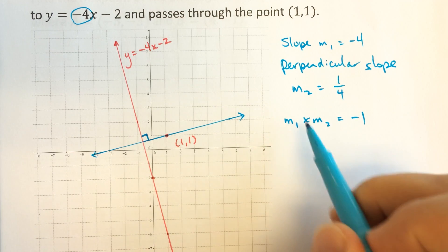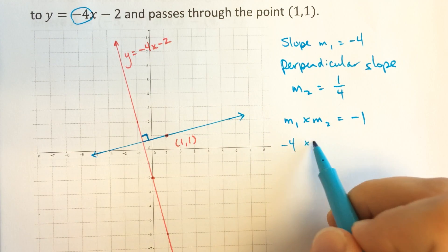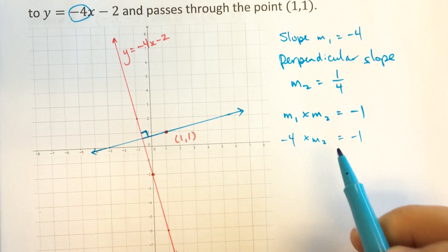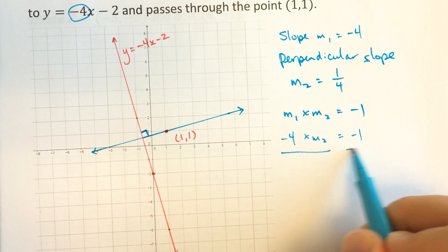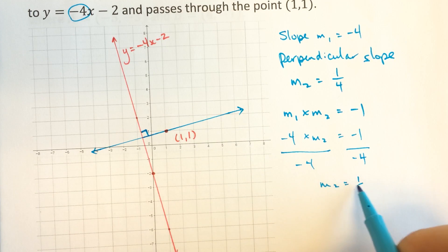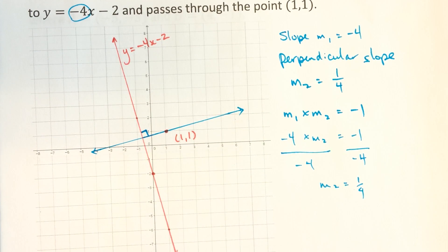So you can solve this by filling in negative 4 times m2 equals negative 1. So there's the original slope. Dividing both sides by negative 4, we get m2 equals 1 quarter. So that's how we can solve it.